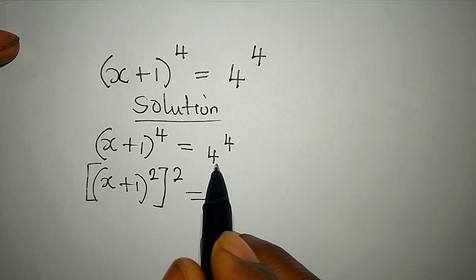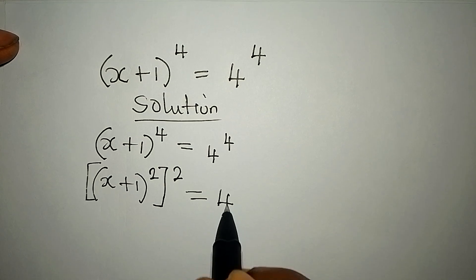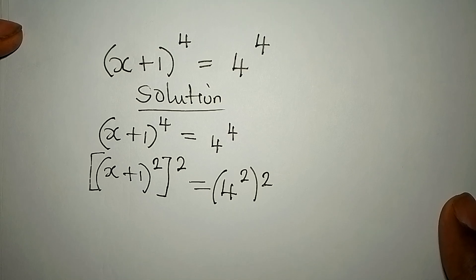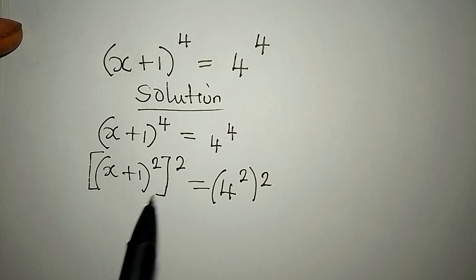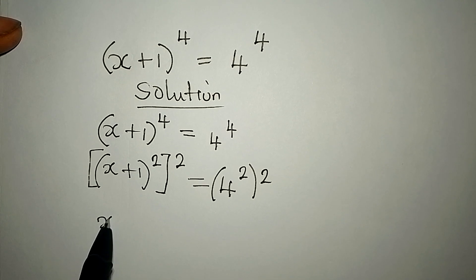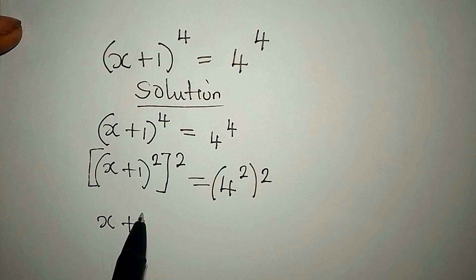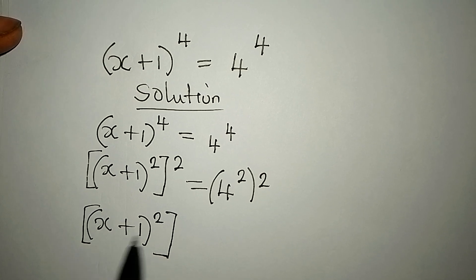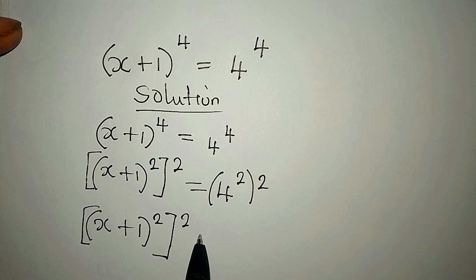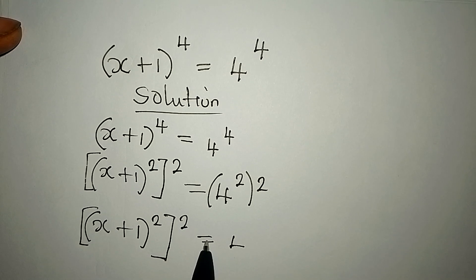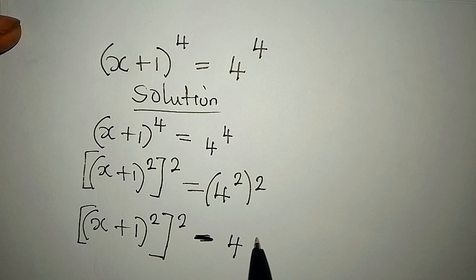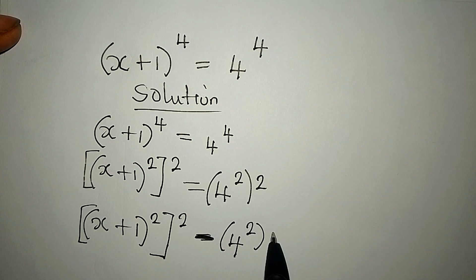So 4 to the power of 4 becomes 4 to the power of 2, to the power of 2. If I take everything to the left, we have (x+1) to the power of 2, to the power of 2, equal to 4 — bringing everything to the left, this becomes negative 4 to the power of 2, to the power of 2, being equal to 0.